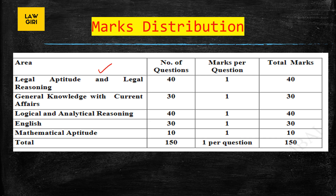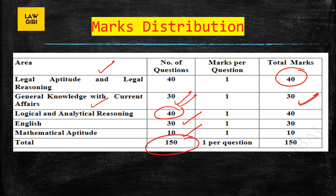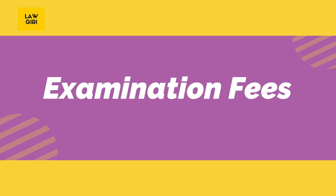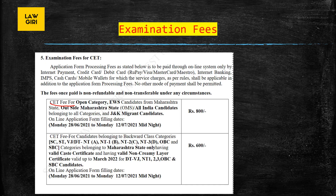Marks distribution: Legal Aptitude and Legal Reasoning — 40 marks; General Knowledge with Current Affairs — 30 questions; Logical and Analytical Reasoning — 40 marks; English — 30 marks; Mathematical Aptitude — 10 marks. Total: 150 marks, one mark per question.